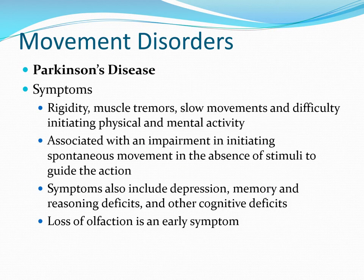Looking at movement disorders and what's going on in the basal ganglia helps make sense of the kinds of disorders that result. Parkinson's disease is specifically caused by a loss of neurons in the substantia nigra — those neurons that send dopamine, both excitatory and inhibitory, into the striatum. Symptoms include rigidity, muscle tremors, slow movements, and difficulty initiating physical movements, particularly spontaneous voluntary movements in the absence of an external cue guiding the action.